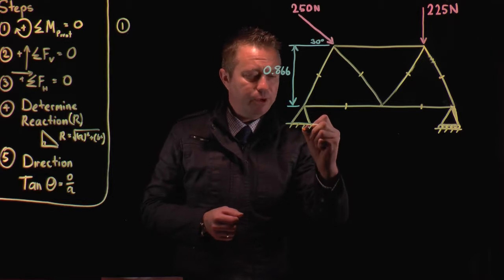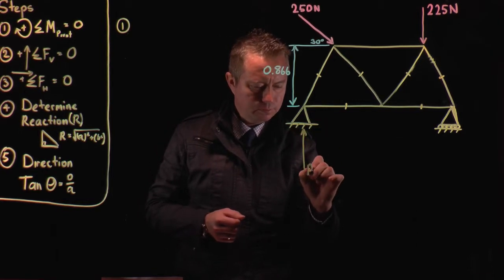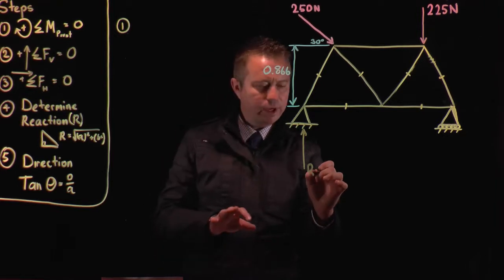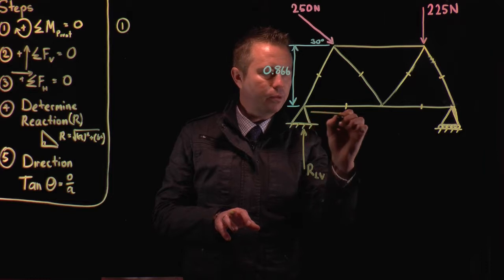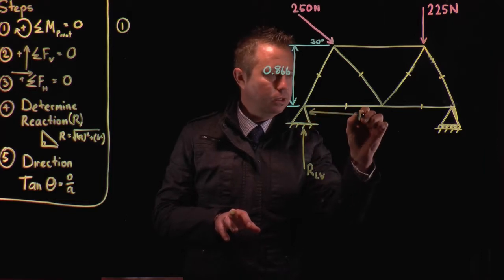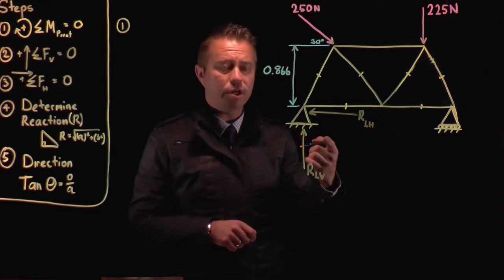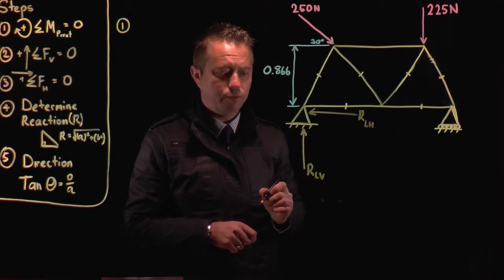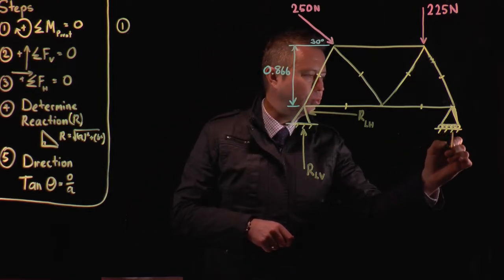We've got our pivot joint. So our pivot we can call reaction LV. We'll also have a reaction here, reaction LH, left horizontal. And we'll have a resultant force that we'll solve towards the end. We also have a vertical force coming up on the roller joint.